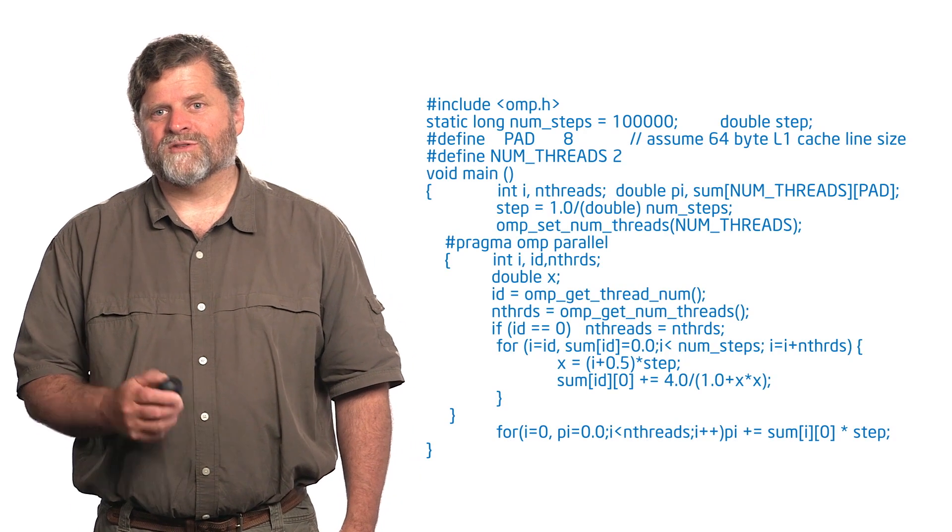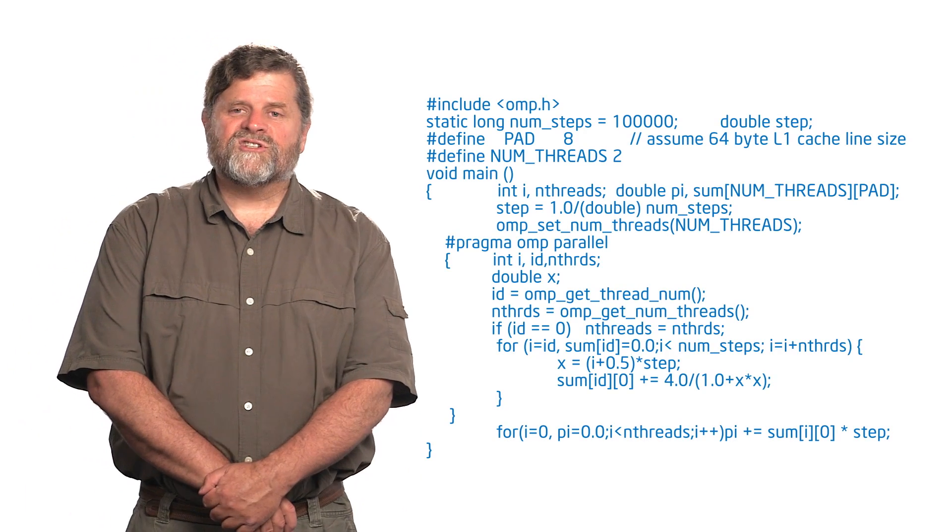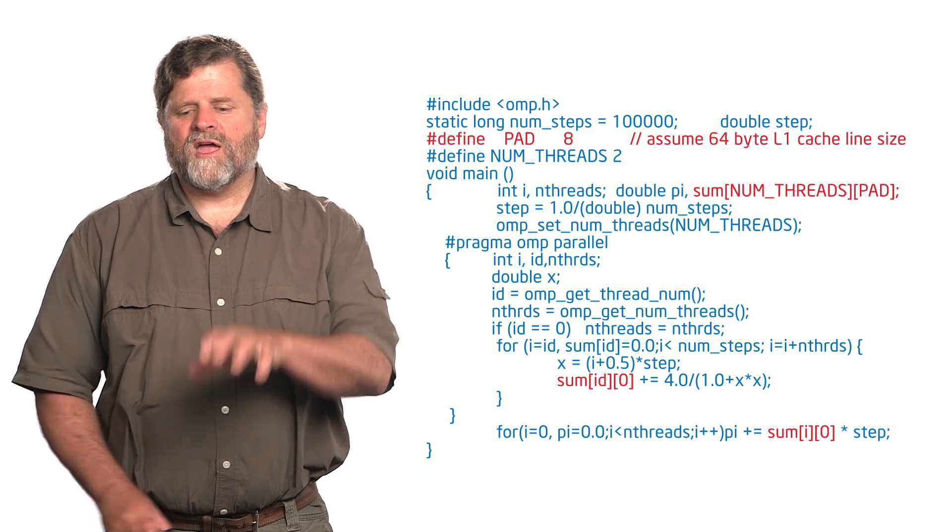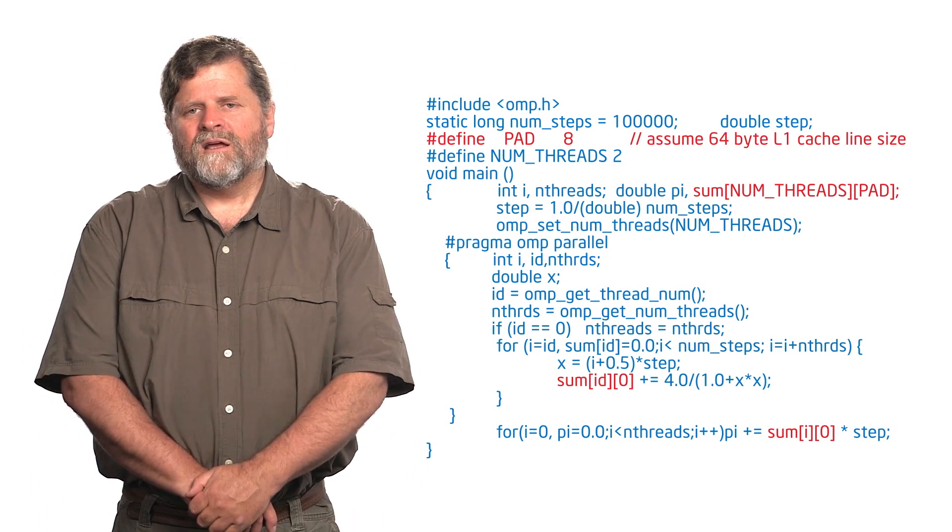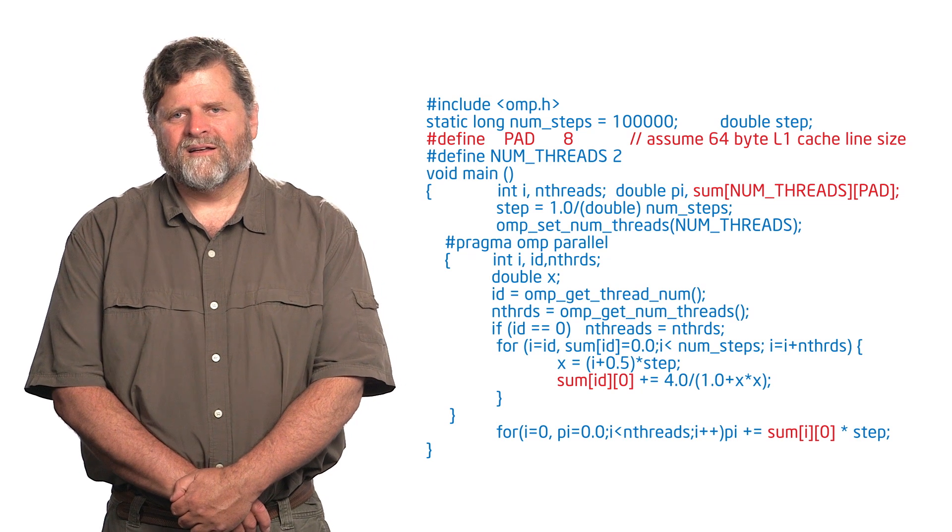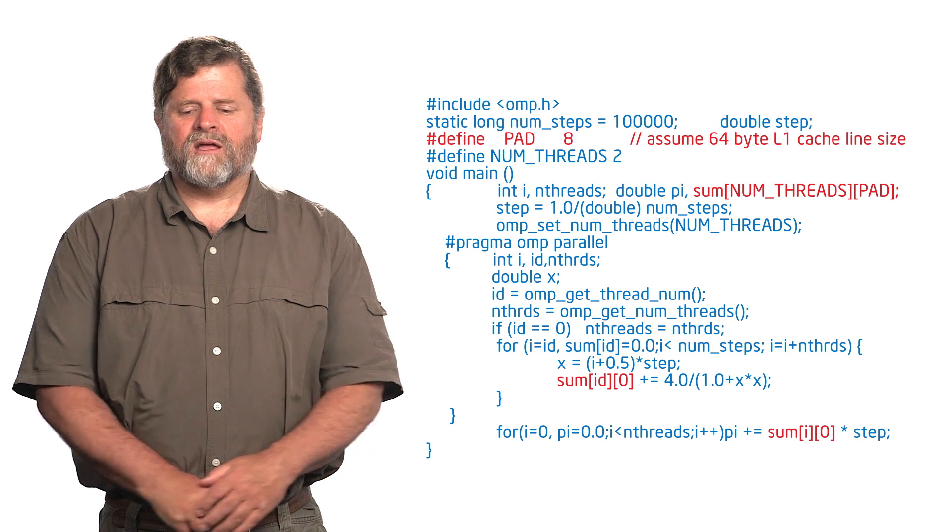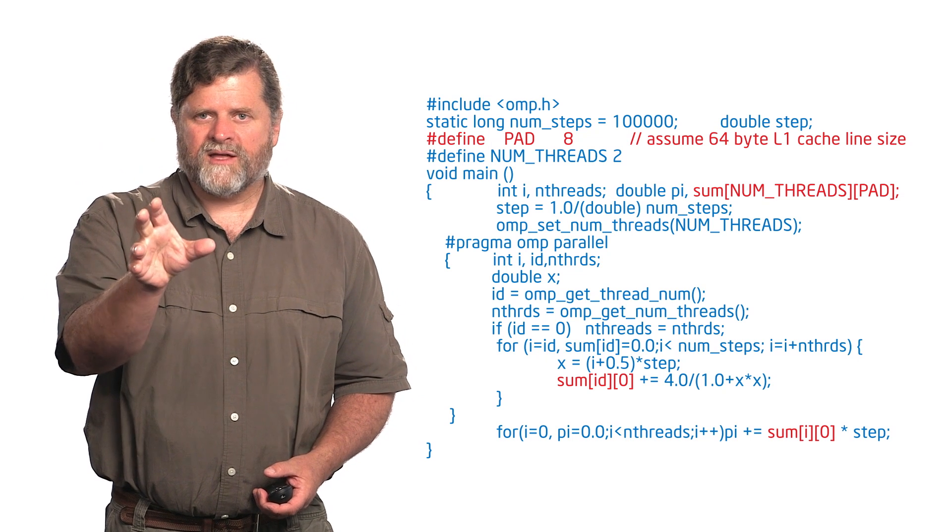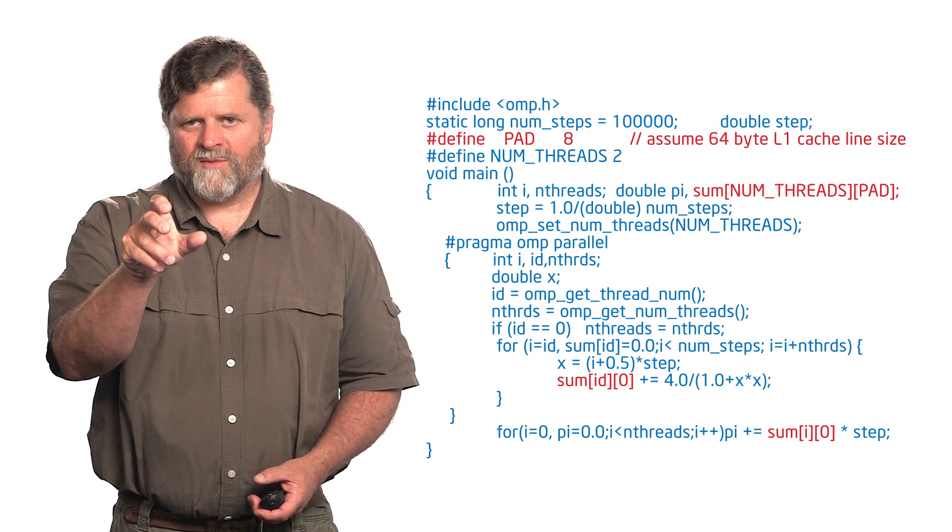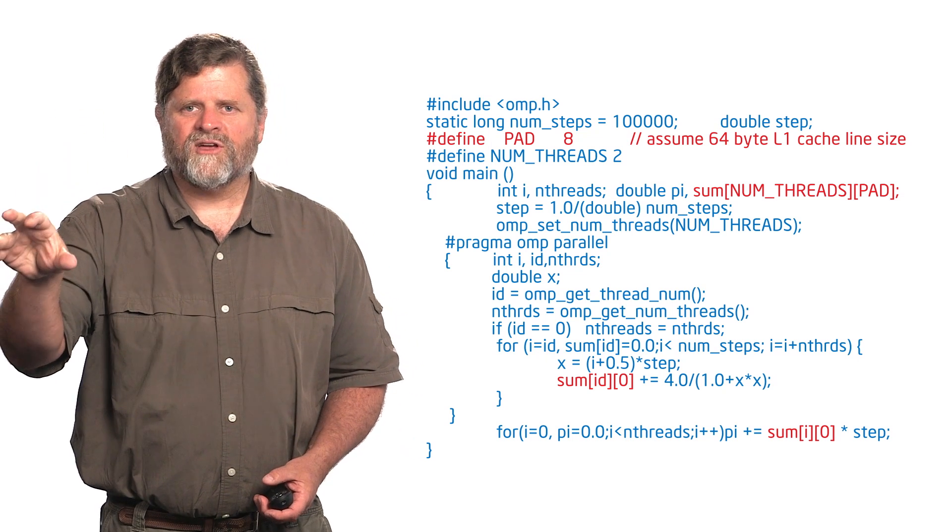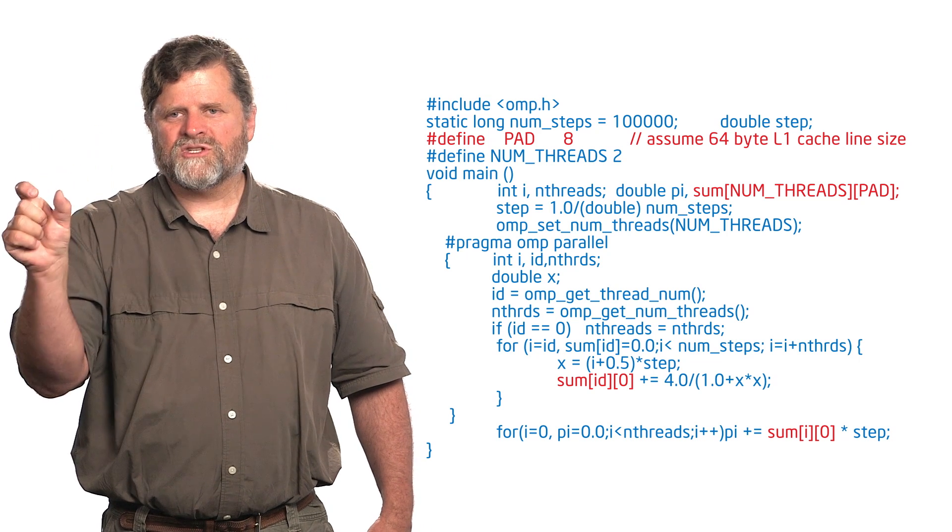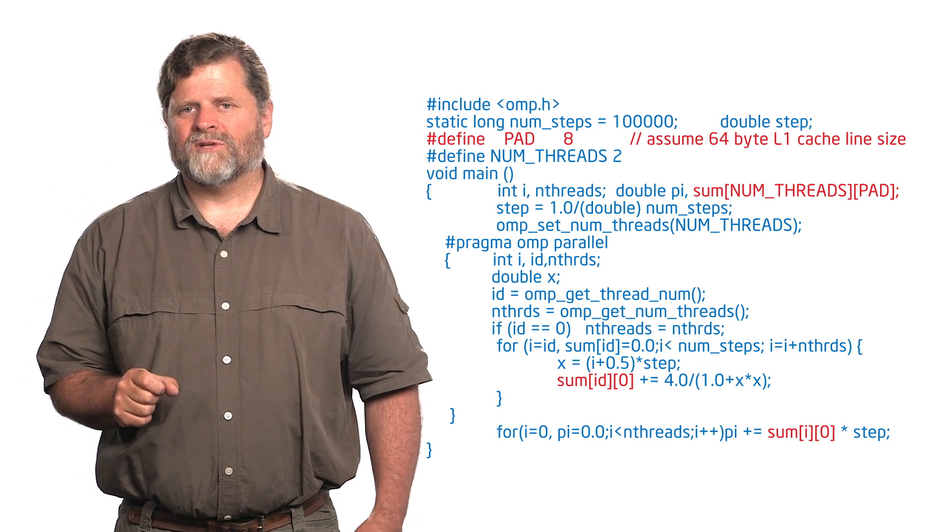There's a way around it. And it's ugly. But here's what it is. In this version of the code, you can see that I added a little array block called pad. And that padded array block, now it's a two dimensional array. It's padded so it's got by the number of threads as the first dimension, which is what I had before. And then I've added this little thing called pad. And then I set pad to be the number of double precision words in a cache line.